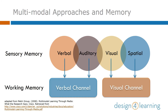Researchers have found that different kinds of sensory experiences relate to different channels within the working memory — a verbal text channel and a visual-spatial channel. Too much into a single one of these channels can cause overload and impair learning, but sensory experiences balanced in both channels simultaneously can support each other and increase learning.